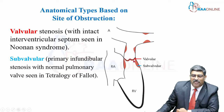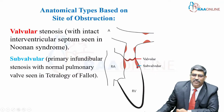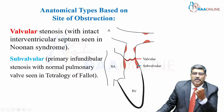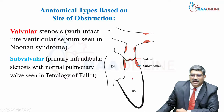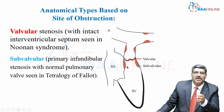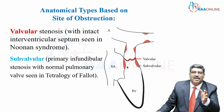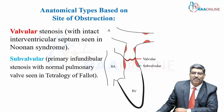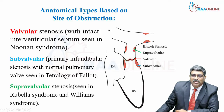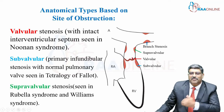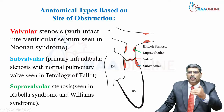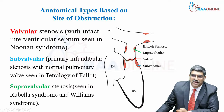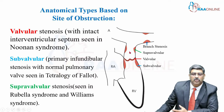Subvalvular stenosis occurs just below the valve, at the infundibular part. Infundibular stenosis is most commonly seen with tetralogy of Fallot. Supravalvular stenosis, which means above the valve, is usually seen in congenital rubella and Williams syndrome.